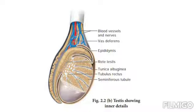Now we are going to learn about the sequence of events in spermatogenesis. Spermatogenesis is the sequence of events in the seminiferous tubules of the testis that produce the male gametes — sperms. During development, the primordial germ cells migrate into the testis and become immature germ cells called sperm mother cells or spermatogonia on the inner surface of the seminiferous tubules.